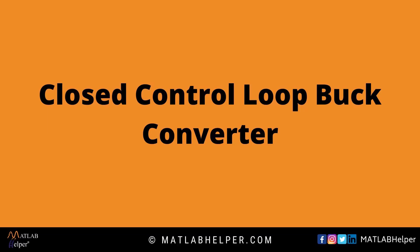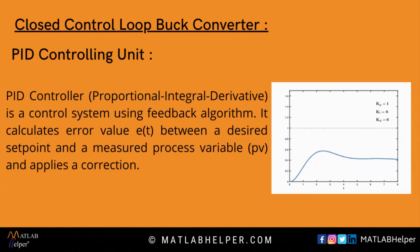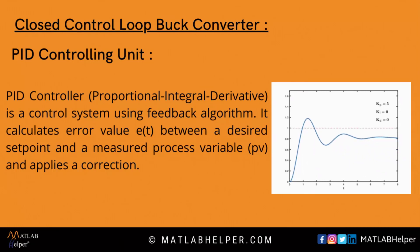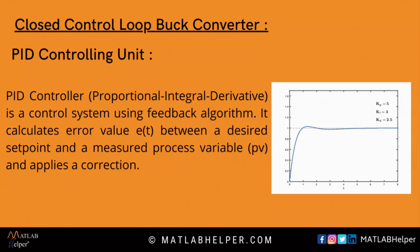Now let's see the same model with the same parameters in a closed control loop buck converter. Before that, let's study the PID controller used in the control loop system. A PID controller — also known as Proportional-Integral-Derivative — is a control loop mechanism employing feedback, widely used in industrial control systems. A PID controller calculates an error value e(t) as the difference between a desired setpoint and a measured process variable PV, and applies a correction based on proportional, integral, and derivative terms — i.e., PID.